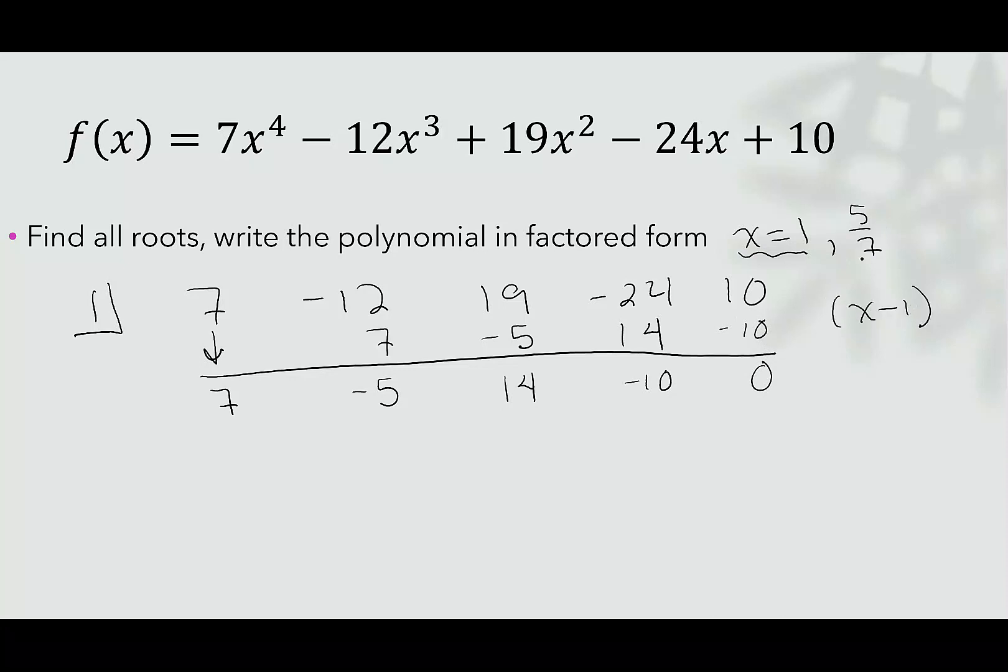We're going to do the same thing with 5/7. I'm going to put 5/7 in a box. I'm going to draw a line. I'm going to bring the 7 down. 5/7 × 7 is just 5. -5 and 5 is 0. 5/7 × 0 is 0. 14 and 0 is 14. 5/7 × 14 is a positive 10. -10 and 10 gives me 0.